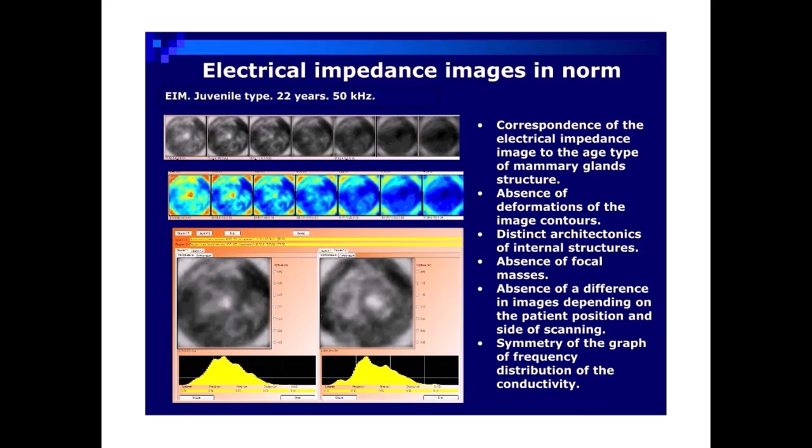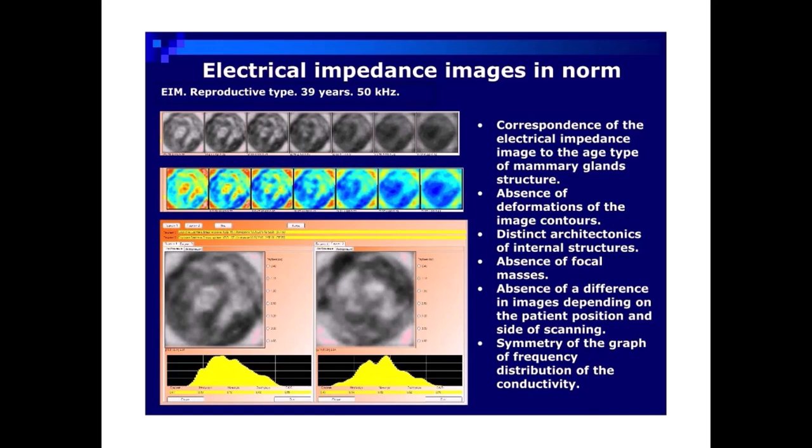Correspondence of the electrical impedance image to the age type of mammary gland's structure. Absence of deformations of the image contours. Distinct architectonics of internal structures. Absence of focal masses. Absence of a difference in images depending on the patient position and side of scanning. Symmetry of the graph of frequency distribution of the conductivity.